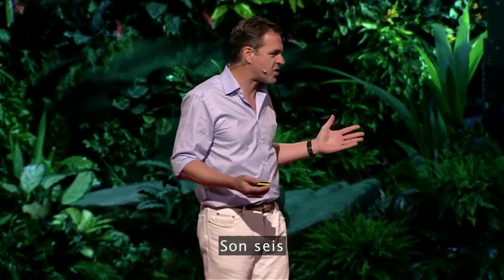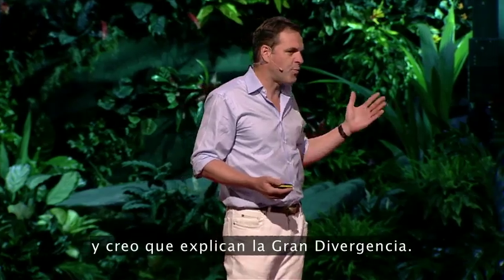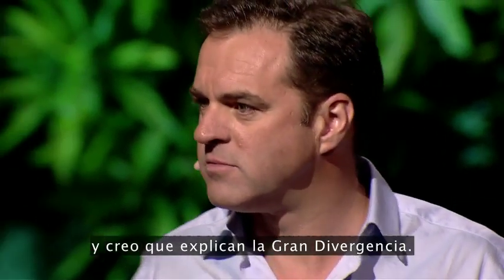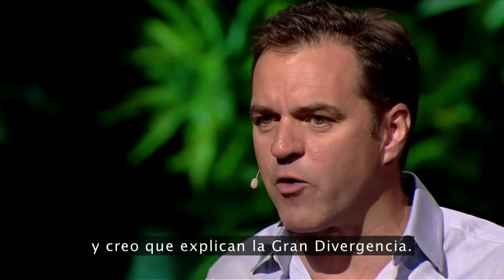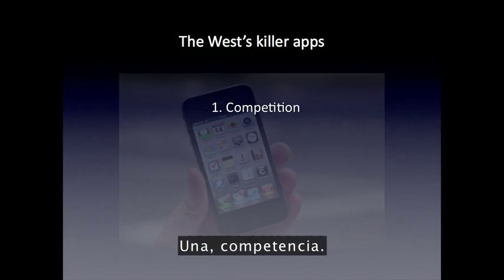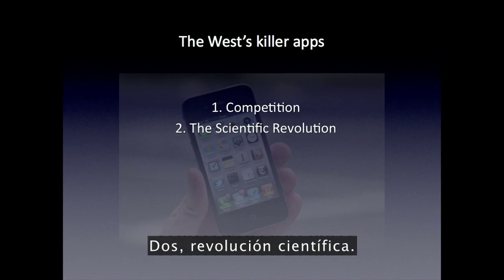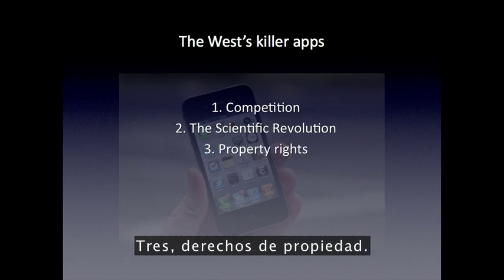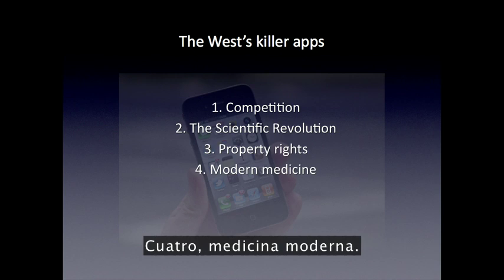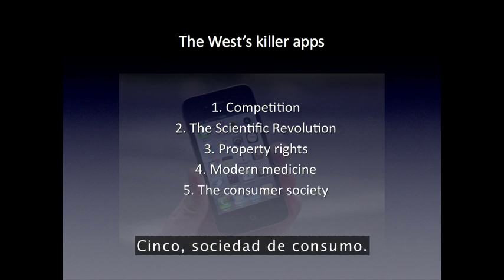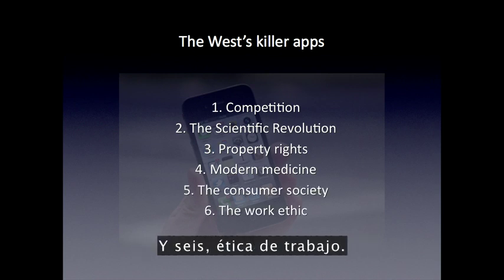There are six which I think explain the Great Divergence. One: competition. Two: the scientific revolution. Three: property rights. Four: modern medicine. Five: the consumer society. And six: the work ethic. You can play a game and try to think of one I've missed out or try to boil it down to just four, but you'll lose.